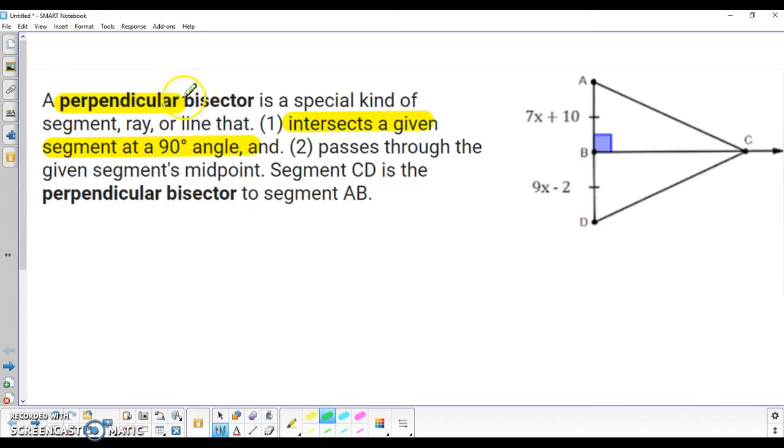The second part of the definition is that it is a bisector. And what does that mean? It means it passes through the given segment's midpoint. So the term perpendicular bisector, each of the two words basically tells you the two requirements that you need for constructing one of these.